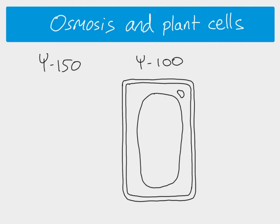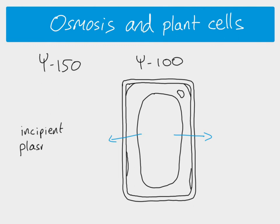If the outside environment has a slightly lower water potential — but not by much — water will still move out and the cell surface membrane will just begin to pull away a little. At that point it is called incipient plasmolysis, meaning plasmolysis is about to happen. If more water were to leave, we would end up with a fully plasmolyzed cell.